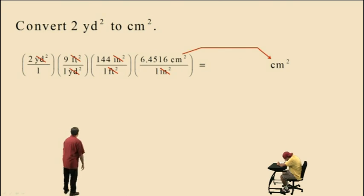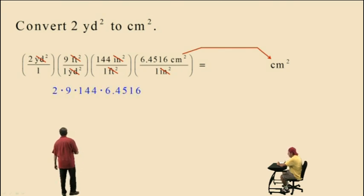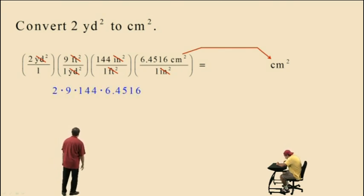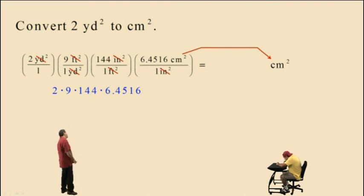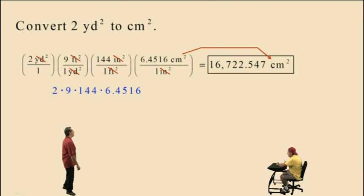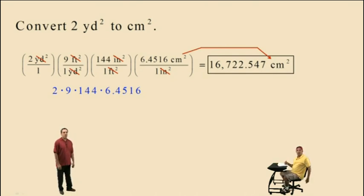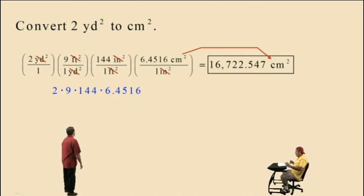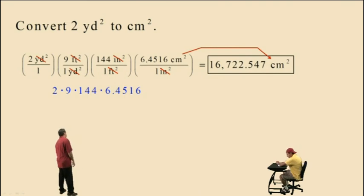To perform our calculation, we take 2 times 9 times 144 times 6.4516, which gives 16,722.547. That is rounded to the nearest one-thousandths, and that is our answer.